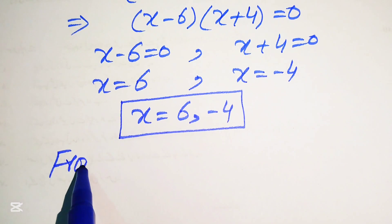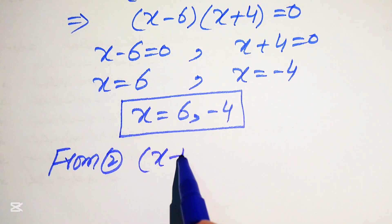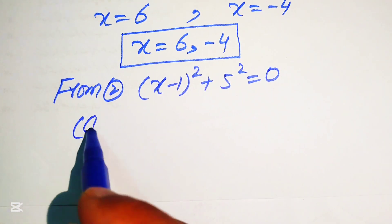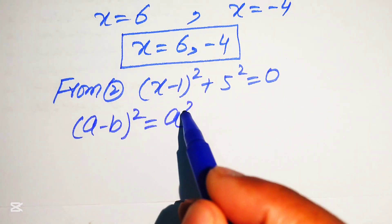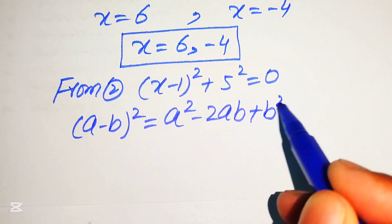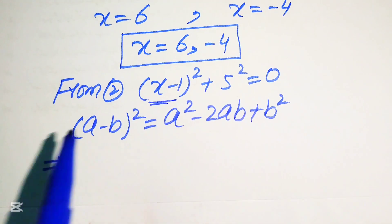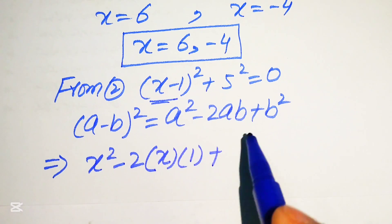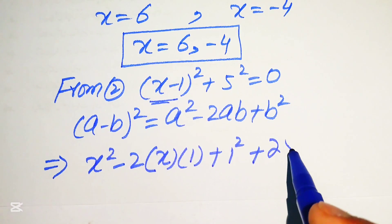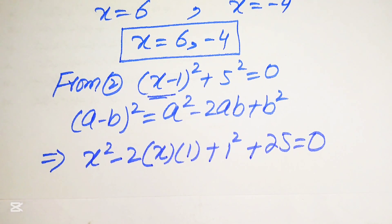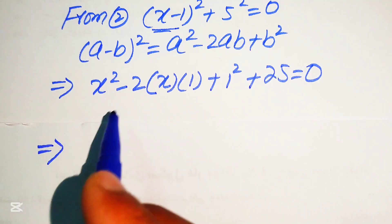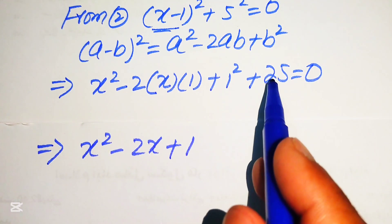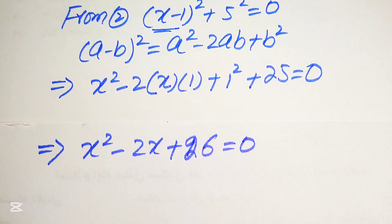Now for Equation 2: (x-1)² + 5² = 0. We expand (x-1)² using the formula (a-b)² = a² - 2ab + b², giving x² - 2x + 1 + 25 = 0, which simplifies to x² - 2x + 26 = 0.